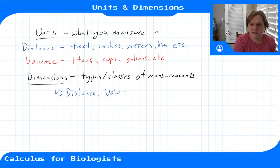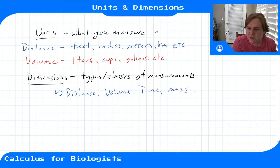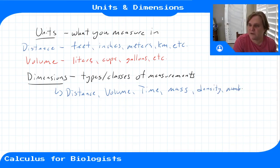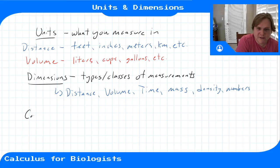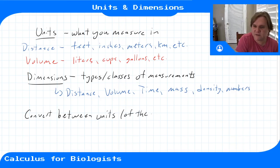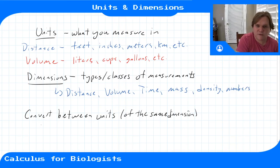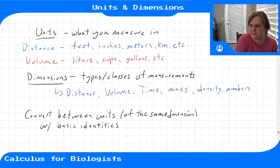There's distance, volume, time (measured in seconds or hours), mass (measured in grams), density, or numbers of cells in bacteria examples. Within a dimension, if you measure something in feet you can convert it to inches, meters, or miles pretty easily. You can convert between different units of the same dimension using a basic proportionality constant between the two.